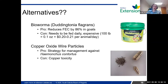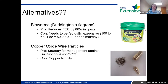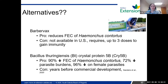Copper oxide wire particles have been shown to be very effective for Haemonchus contortus — the barber pole worm. Basically you feed an encapsulated gel that has tiny copper wire particles, which lodge into the abomasum of the stomach and somehow prevent parasites from feeding on the animal. The problem is copper toxicity — definitely a concern for sheep, and to some extent with goats it is possible to overfeed it.